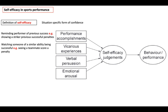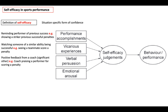We also have verbal persuasion as one of the four types of information. Verbal persuasion is when positive feedback from a coach or significant other can help increase self-efficacy. For example, a coach praising a performer for scoring a penalty.